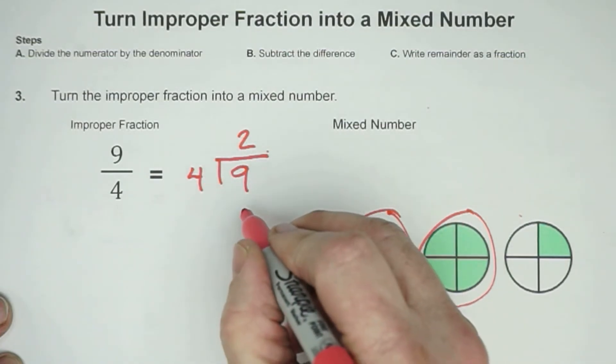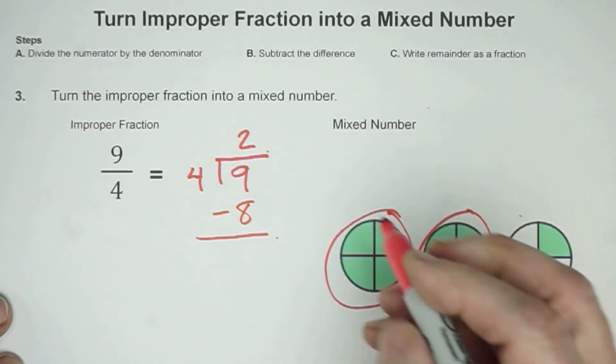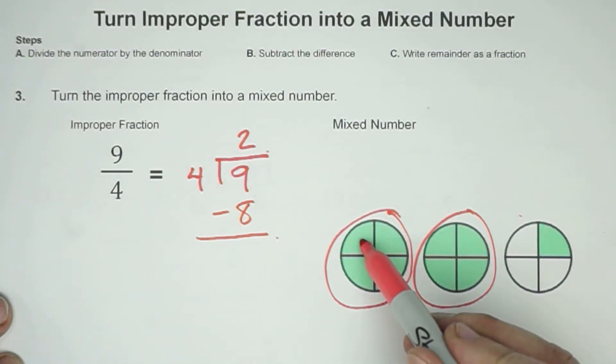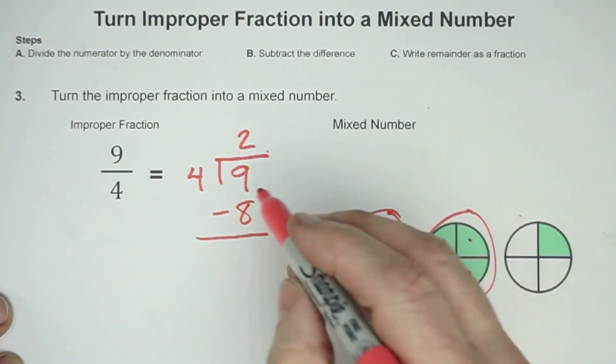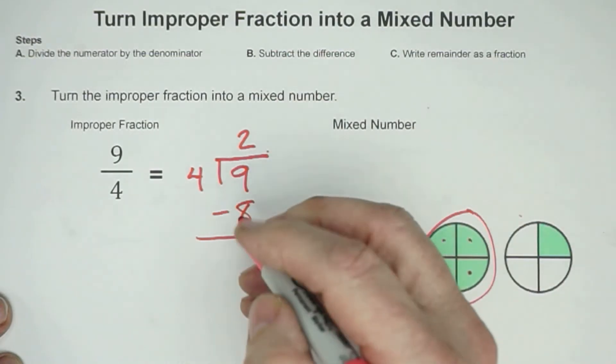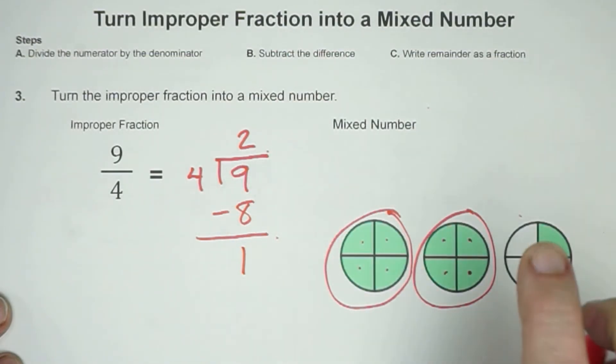2 times 4 is equal to 8. And I could show that here by just looking at 1, 2, 3, 4, 5, 6, 7, 8. And then if we subtract, 9 minus 8 is the 1, which we're seeing that right here.